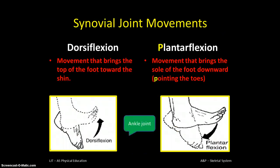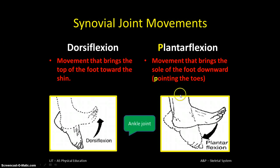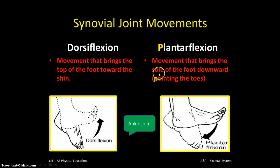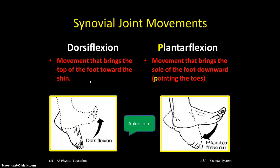Dorsiflexion and plantar flexion: we commonly say that dancers or gymnasts should be able to point their toes. The ankle joint has a movement called plantar flexion, which is essentially pointing your toes — a way of remembering it is that both 'plantar' and 'pointing' start with P. Dorsiflexion is the opposite — the movement of the toes up towards the shin, or upward flexing of the ankle joint.